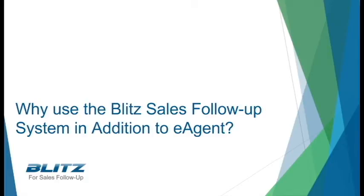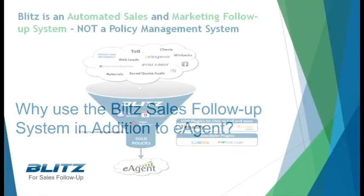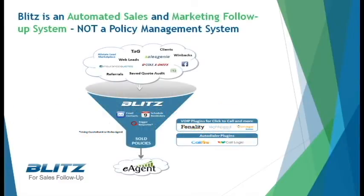Blitz is an automated sales and marketing follow-up system. eAgent's focus is on policy management. What's the difference? eAgent is focused on managing policies and lightly tracking your customers.